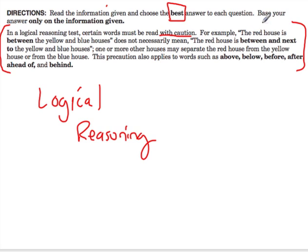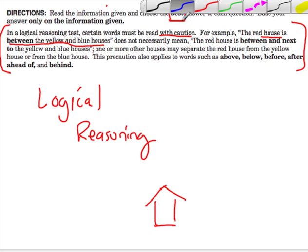if they say the red house is between the yellow and blue house, what does that mean? It doesn't mean that the red house is between and next to the yellow and blue houses. What I mean is, if there's a red house right here and we know that it's between a blue house and a yellow house,